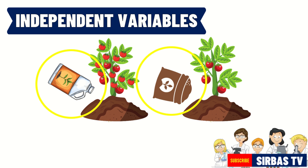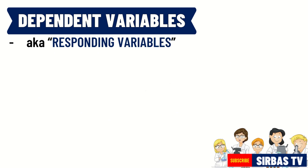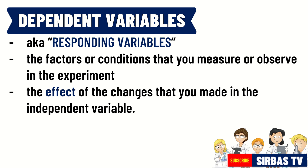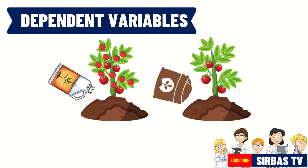The variable that is affected by the change you made in the independent variable is called the dependent variable. Dependent variables are also called the responding variable because they respond to the changes you have made with the independent variable. They are the factors or conditions that you measure or observe in the experiment. In the case of type of fertilizer versus number of fruits yielded, the number of fruits yielded is the dependent variable, because the number of fruits depends on the type of fertilizer used in each plant.